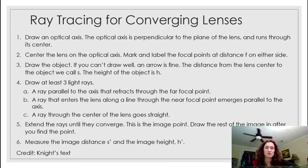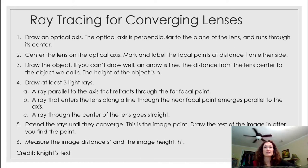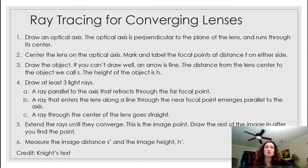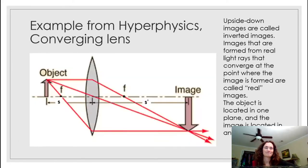For a converging lens, extend the rays until they converge — that convergence point is your image point. After finding the image point, draw the rest of the image. Then measure your image distance s prime and your image height h prime.